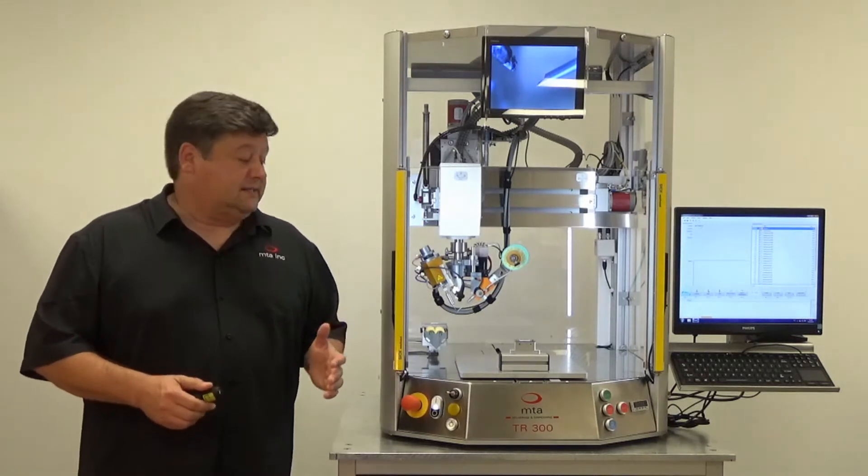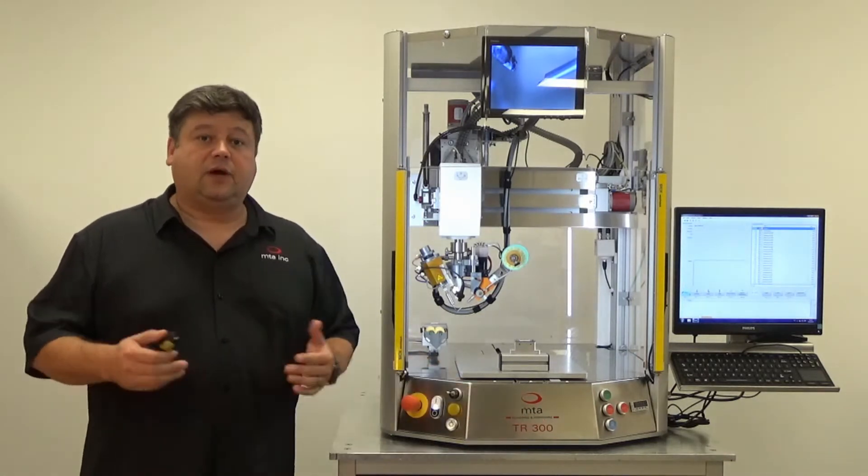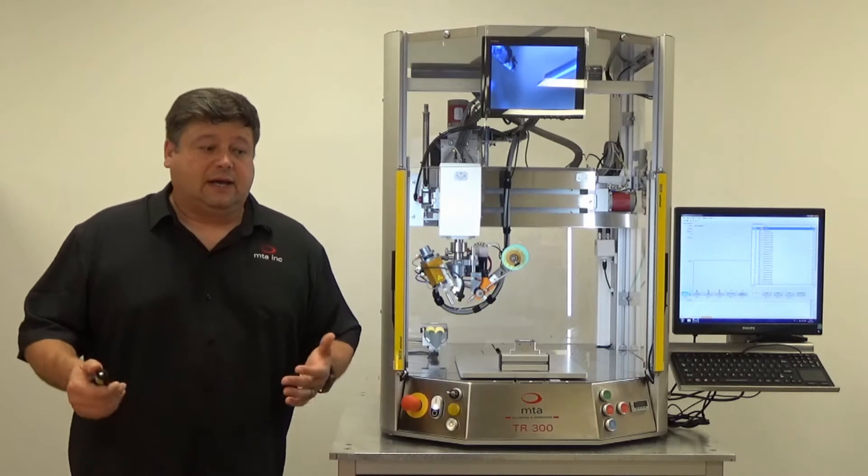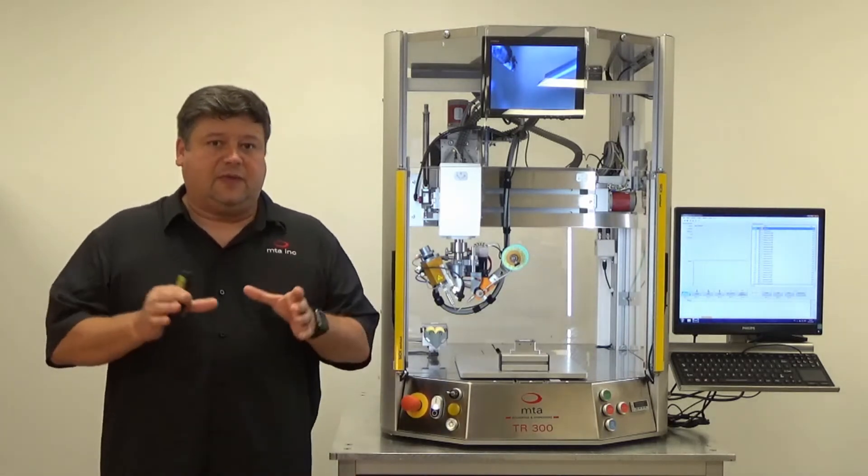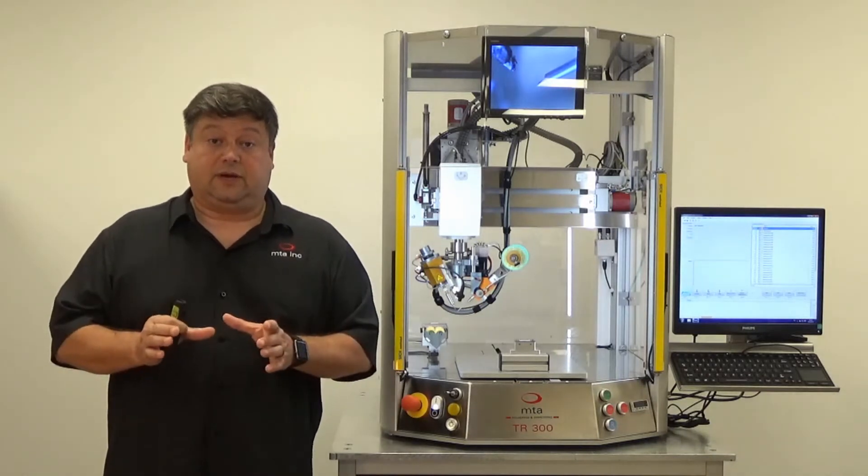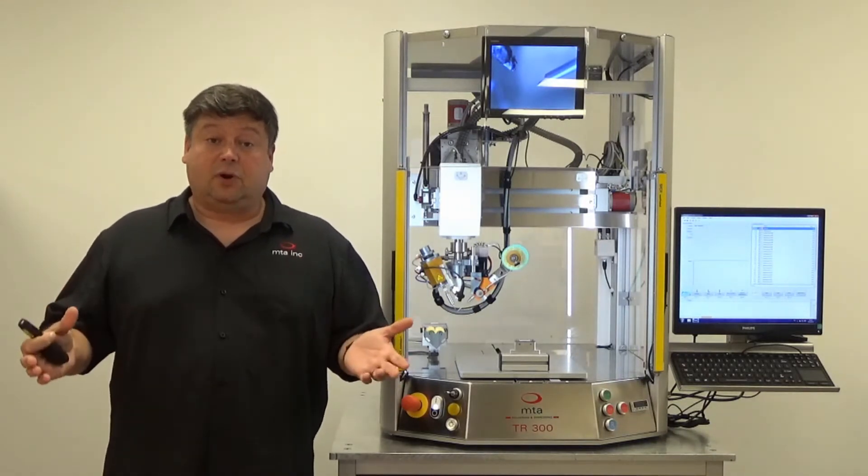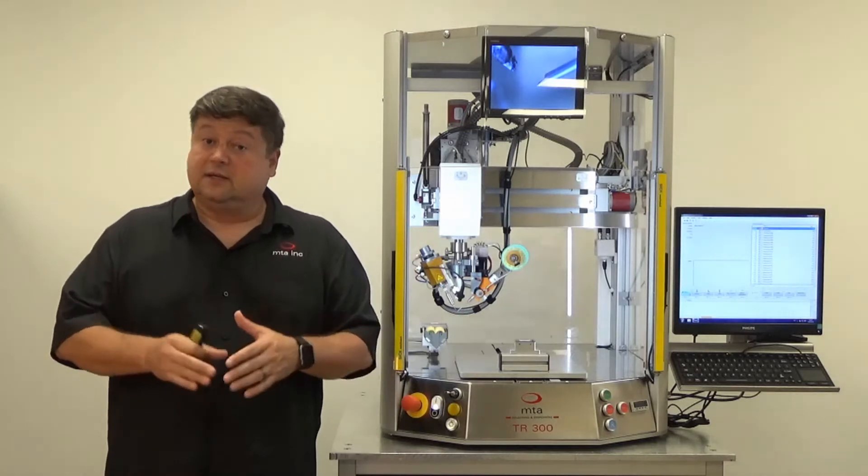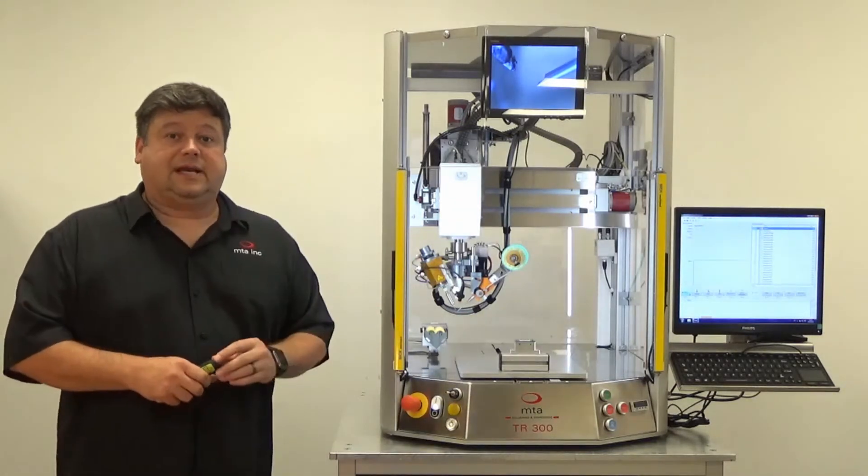The first thing I'd like to point out to you is that the 300 stands for the 300x300 work area. Now this doesn't mean that your parts have to fit within that 300x300, it just means that the solder joints need to fit within 300x300. So if you have slightly larger parts, but all the solder joints fit, then you can solder it on the tabletop robot.